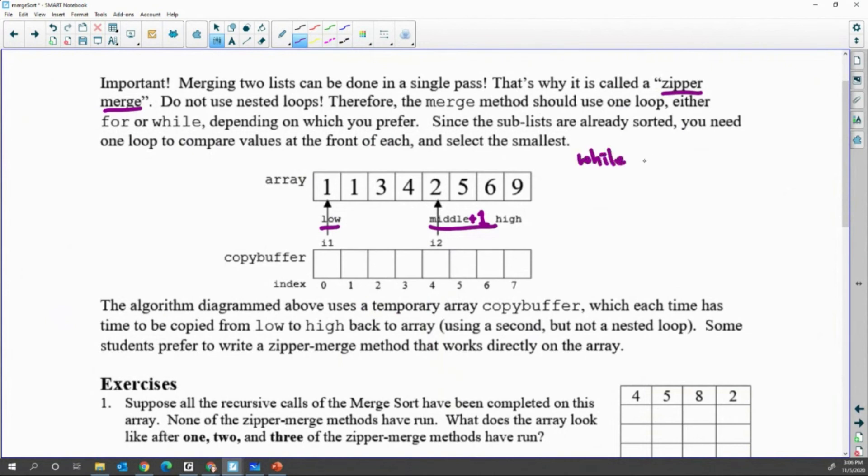What we do is, while I1 is valid and I2 is valid, we compare values at I1 and I2. The smaller one, if I1 has less than or equal to, I1's value goes to the copy buffer. Then only I1 will increase by 1. If I use I1, only I1 pointer moves. Then compare I1 and I2 values again. If I1 has smaller or equal to value, only I1's value is copied down to the copy buffer, then I1 pointer increases by 1.